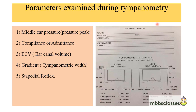After recording, the graph is plotted and is known as a tympanogram. The tympanometry report includes patient data, age, gender, type of graph, and type of reflexes. The parameters examined during tympanometry are: middle ear pressure (peak pressure), compliance or admittance, ECV (ear canal volume), gradient, tympanometric width, and stapedial reflexes.